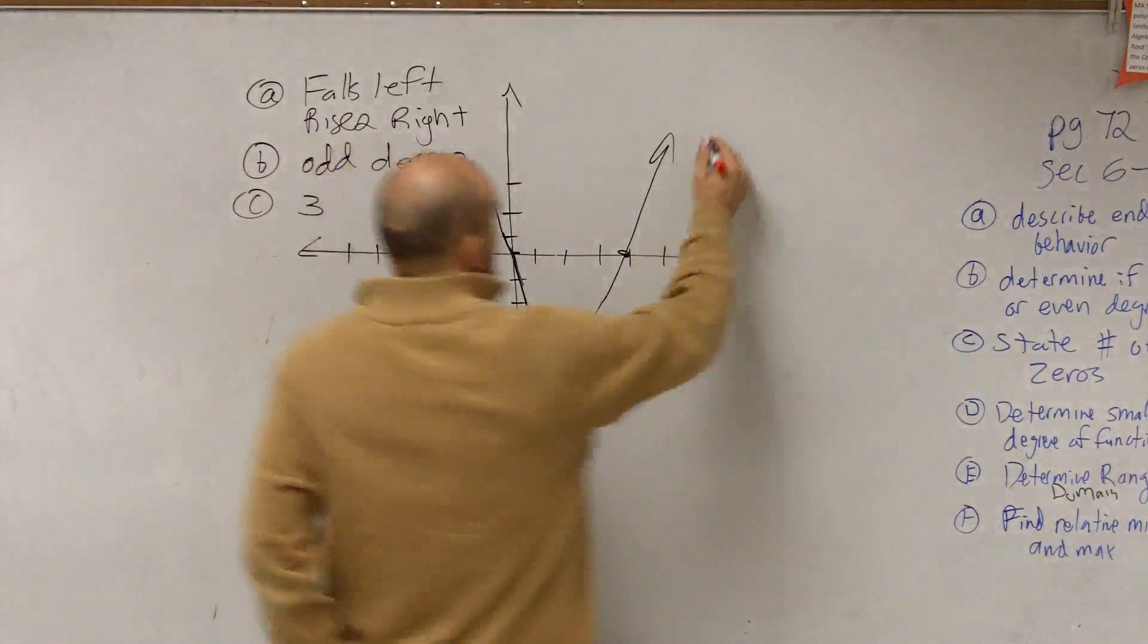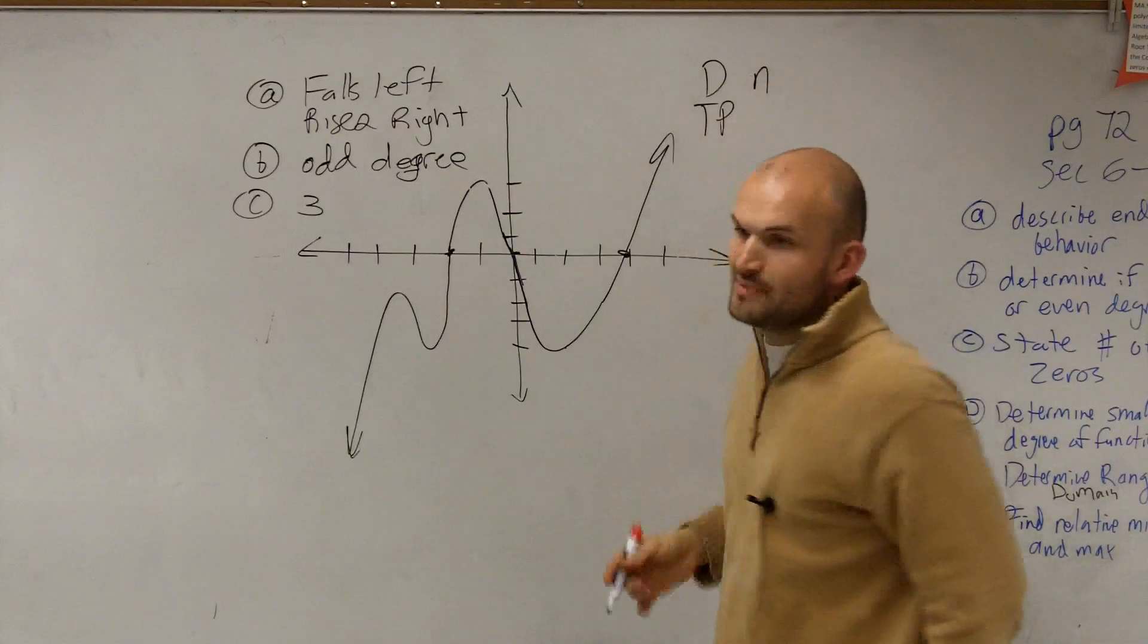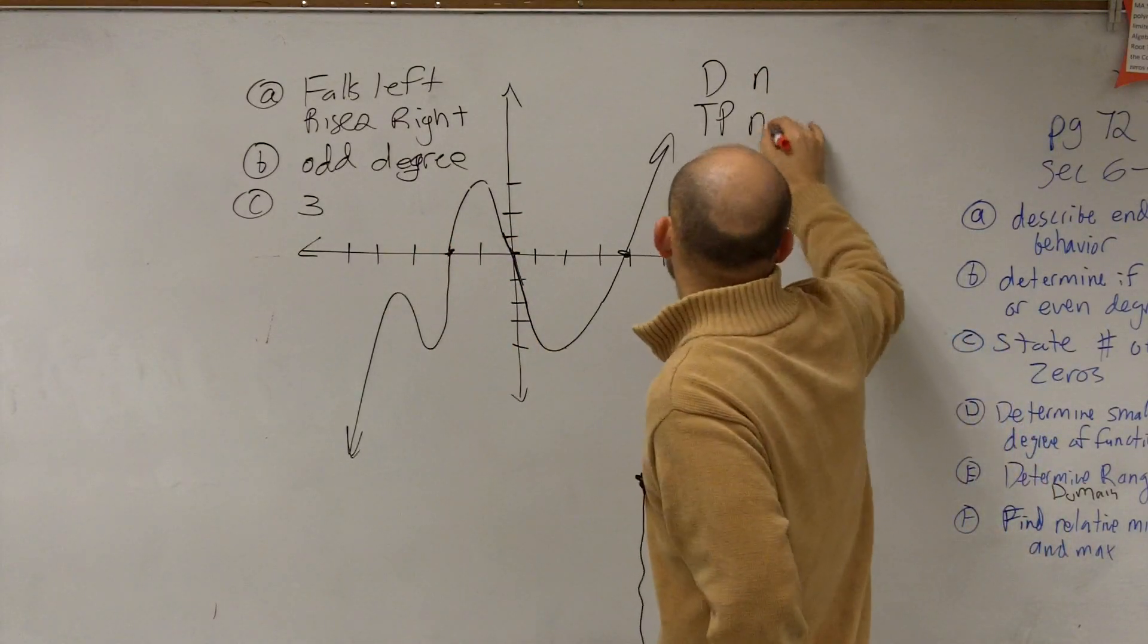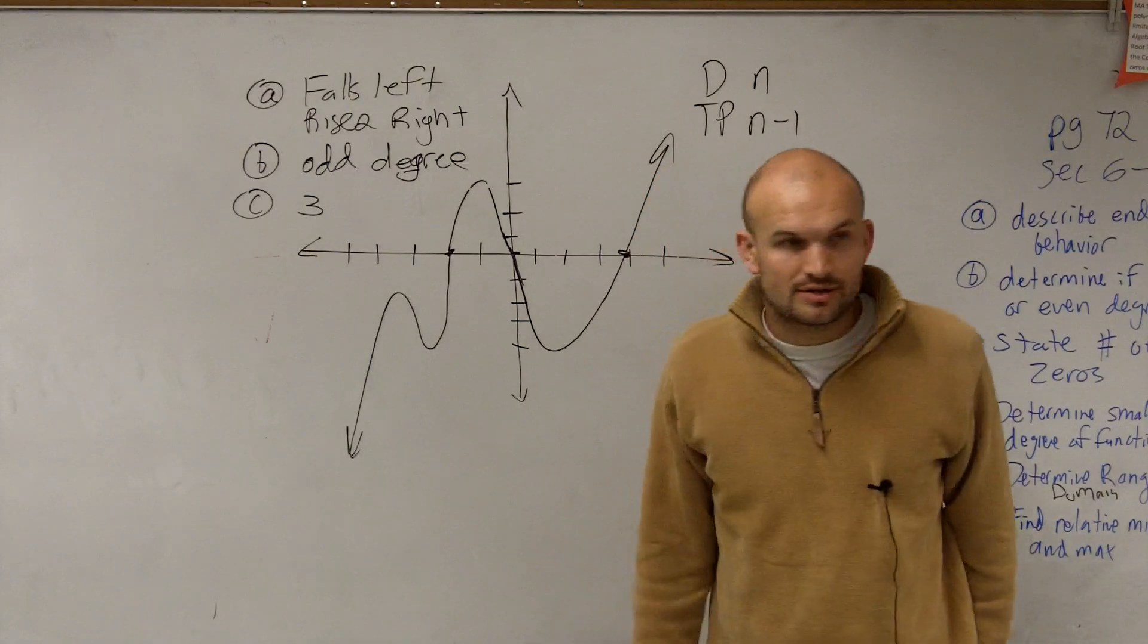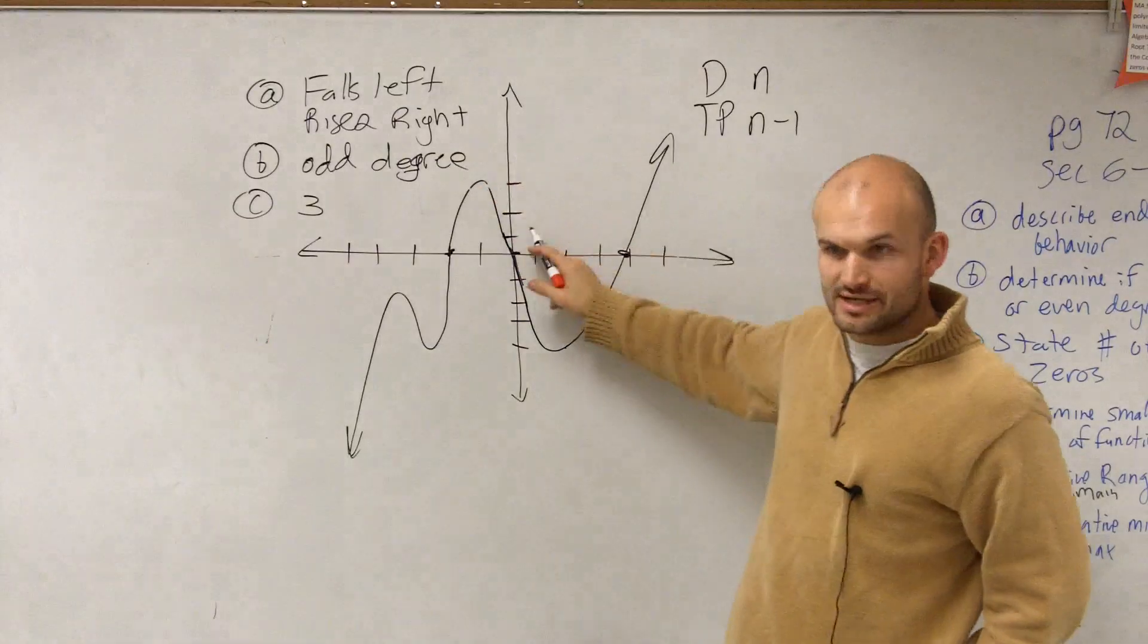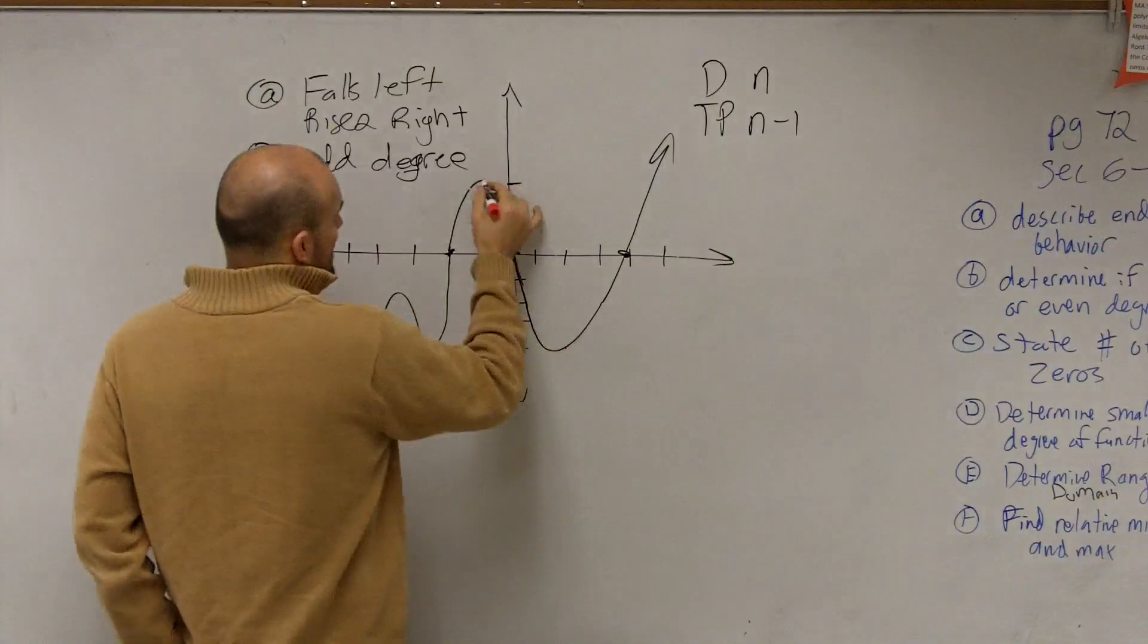The turning points. And what we said was, the number of turning points of a graph, let's say we have a degree of n. So if my degree is n, some number, that means the number of turning points is n minus 1. Do you guys remember talking about that? And remember, the turning points is where the graph either increases then decreases, or is decreasing then goes to increasing.